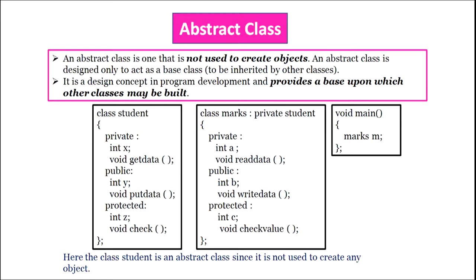An abstract class is one that is not used to create objects. An abstract class is designed only to act as a base class to be inherited by other classes. It is a design concept in program development and provides a base upon which other classes may be built. In the example of class student and class marks, marks is a child class inheriting class student privately. In main, we create an object m of class marks but no object of class student. So class student here acts as an abstract class because it is not used to create any object.